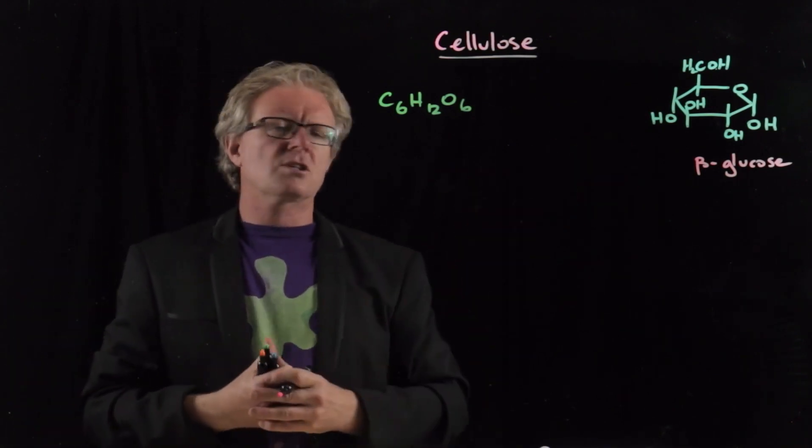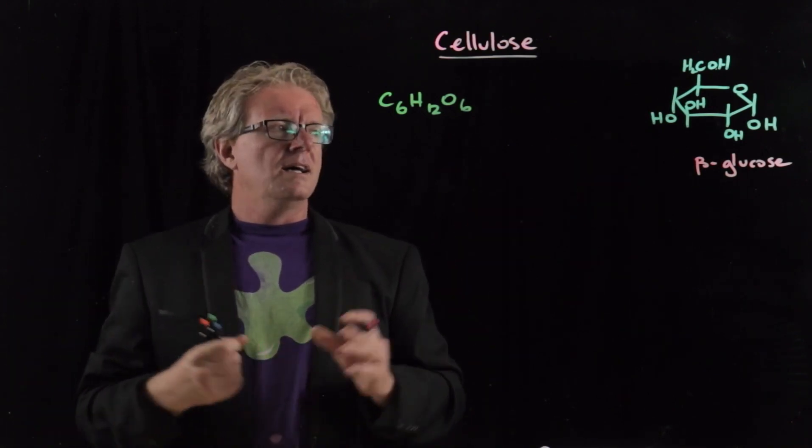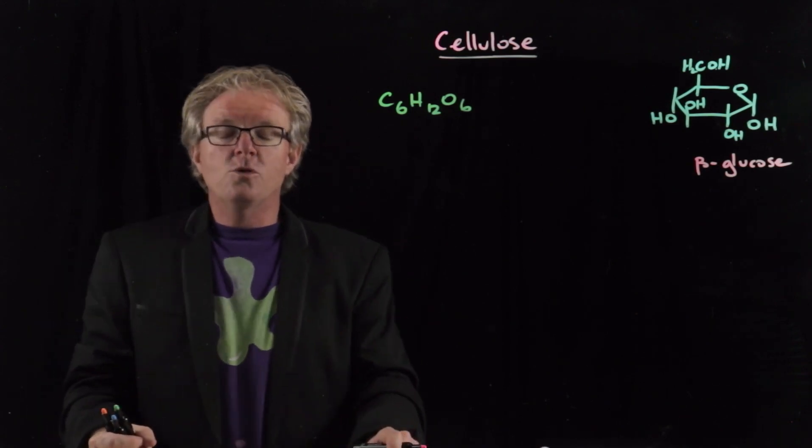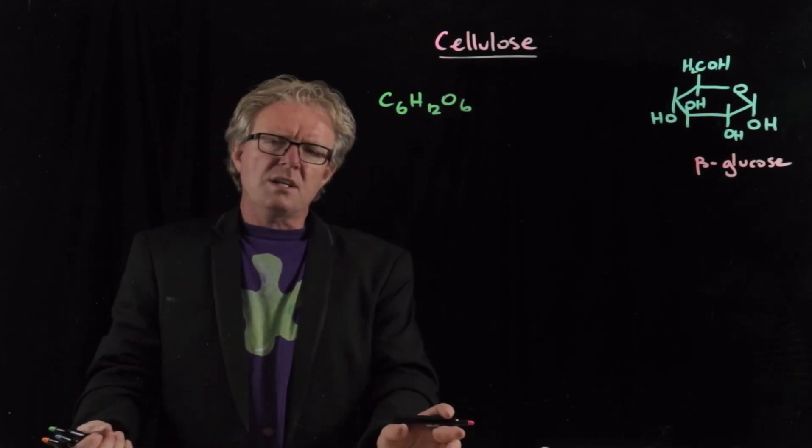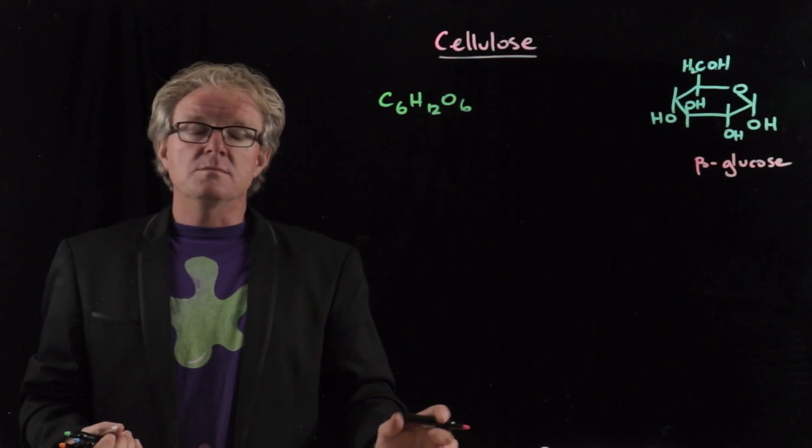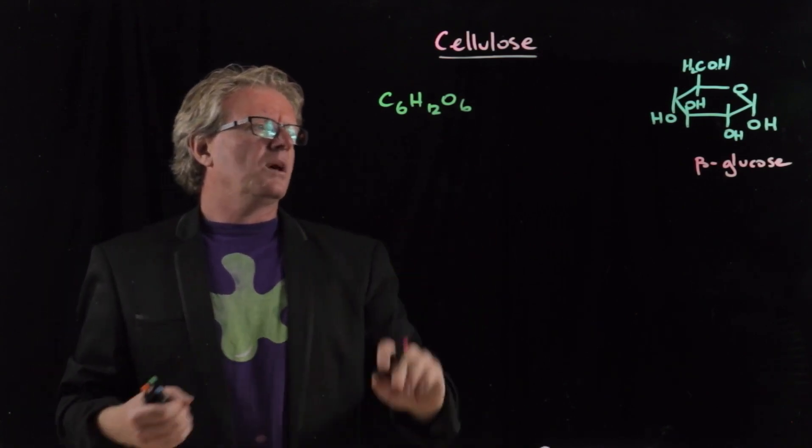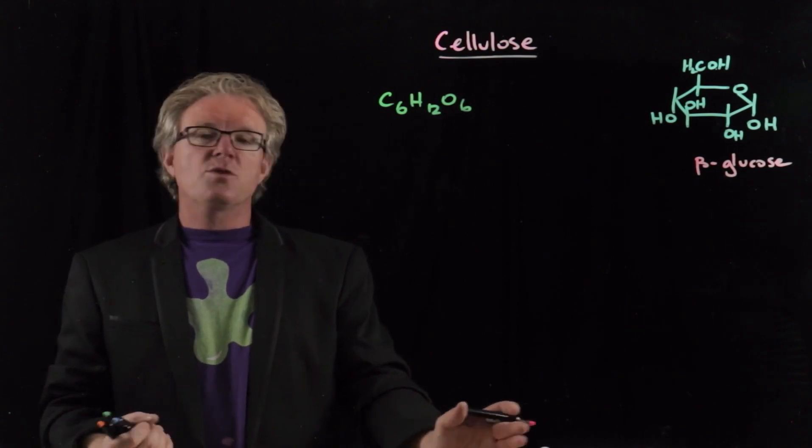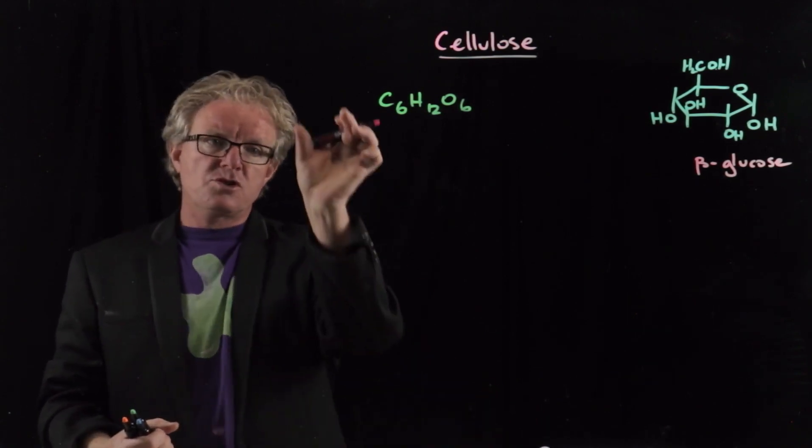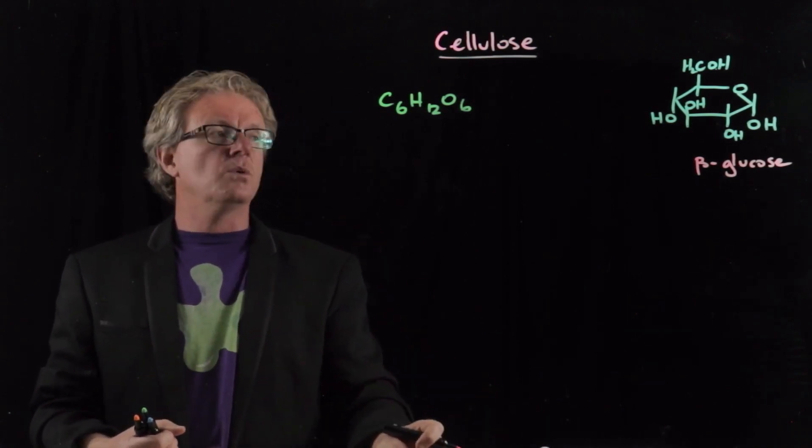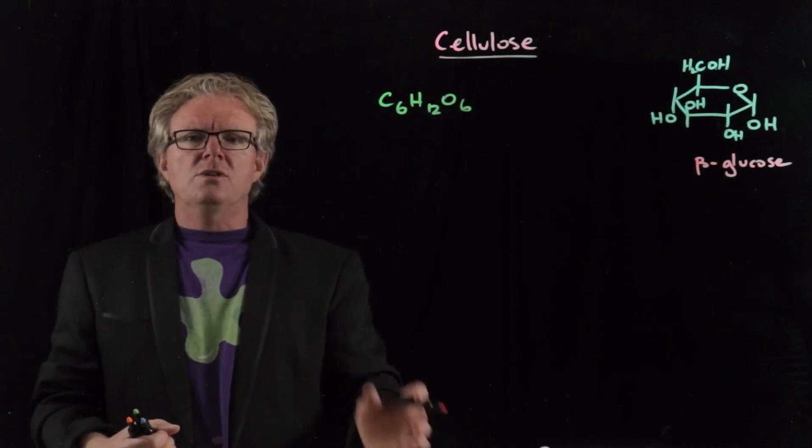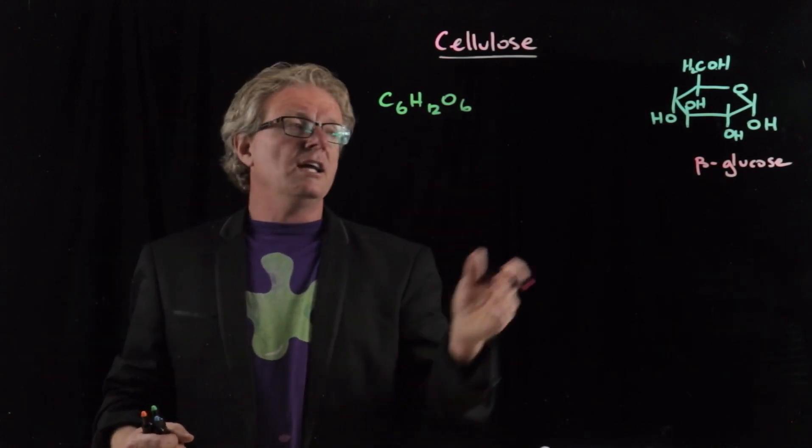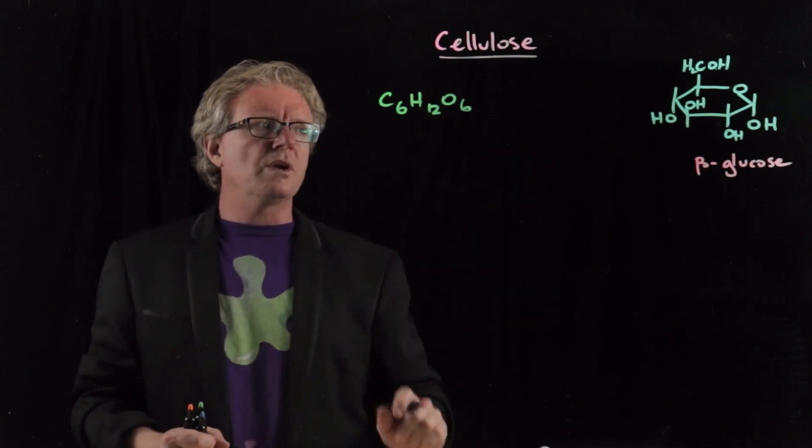Let's have a look at the structure of glucose. Glucose exists in different structural forms or isomers, and this particular one here is called beta-glucose. It's the ring structure of glucose. We can have straight chain varieties as well. In solution you'll have an equilibrium between straight chain and ring form. I'm just drawing the ring form here.